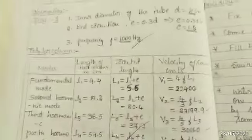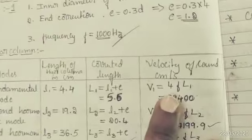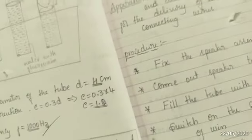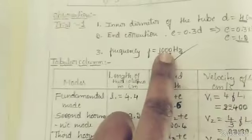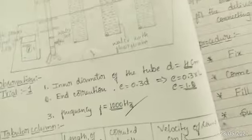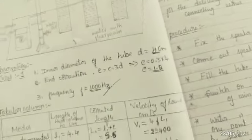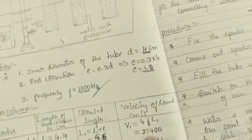Calculate velocity. V is equal to 4 F L1. If I substitute F, that is 1000, L 5.6 centimeter, I will get 22,400.